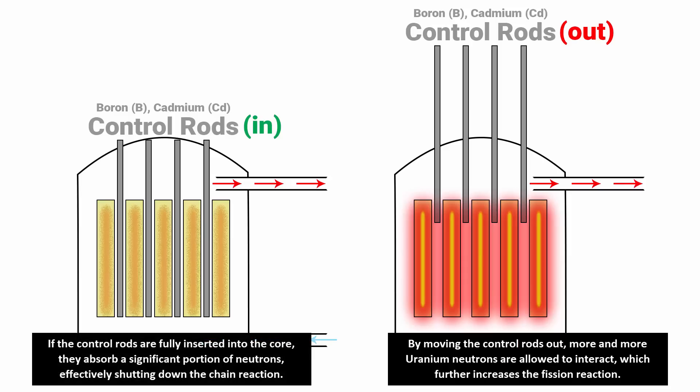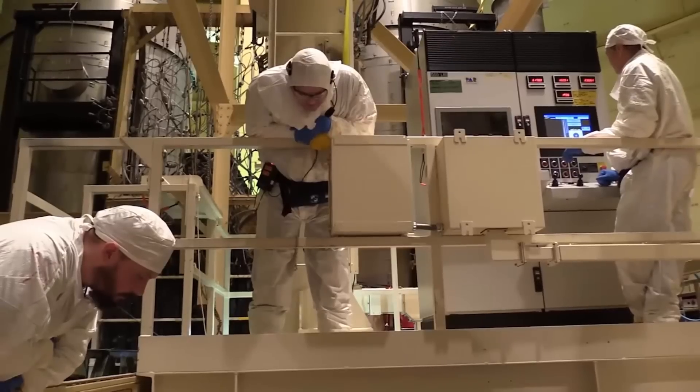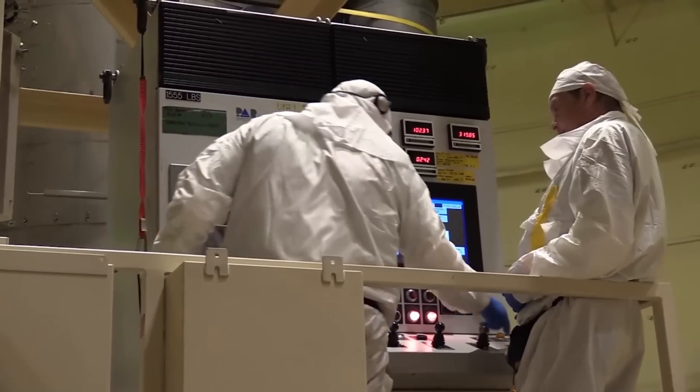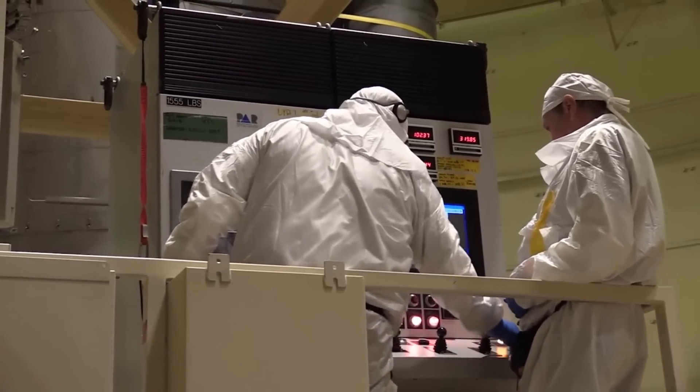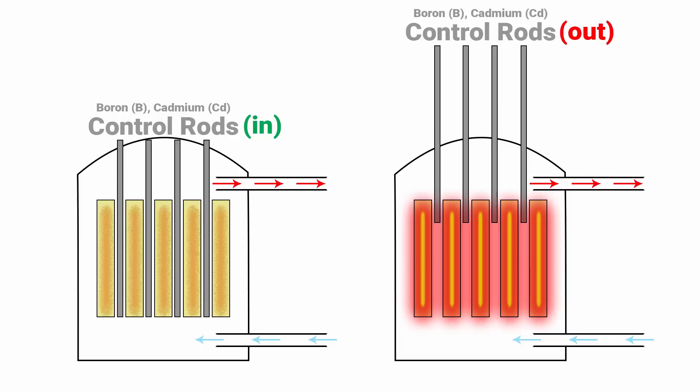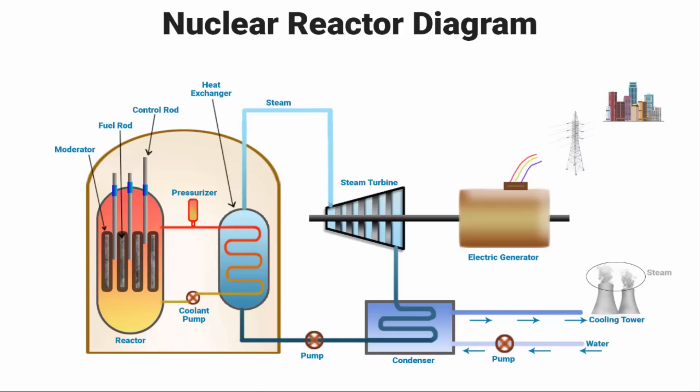If the control rods are fully inserted inside the core, they absorb a significant portion of neutrons effectively shutting down the chain reaction. Similarly, withdrawing the control rods fully allows more neutrons to interact with the fuel, increasing the rate of fission reaction and thus the power output of the reactor. That is why it is very important for the operators to continuously monitor various parameters such as reactor's power, temperature and neutron flux to ensure safe and efficient operation of the reactor. Now adjusting the position of the control rods is one of the primary means by which operators maintain control over the reactor's power level and overall performance.